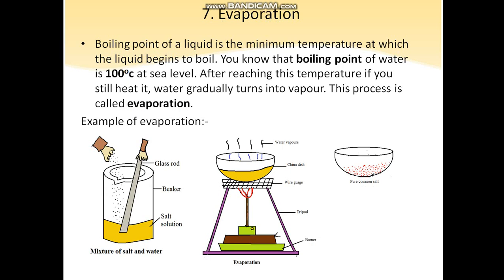The next process is evaporation. Evaporation is very essential in the water cycle. In evaporation, the water boils and turns into steam or water vapor. The boiling point of a liquid is the minimum temperature at which the liquid begins to boil. The boiling point of water is 100 degrees Celsius.